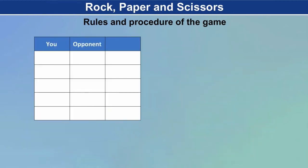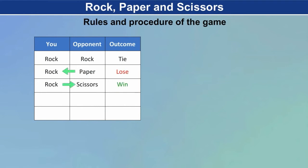You vs Opponent — Outcome: Rock vs Rock: tie. Rock vs Paper: lose. Rock vs Scissors: win. Paper vs Rock: win. Paper vs Paper: tie.